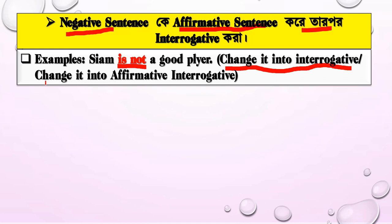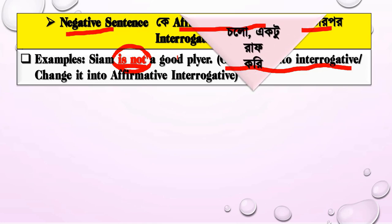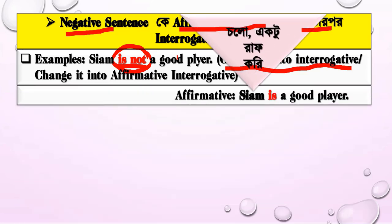When changing an assertive sentence into an interrogative, if you see an affirmative sentence, do some rough work first. For example, if the sentence is 'CM is a good player,' do your rough work — it is not a negative sentence, so it is affirmative.